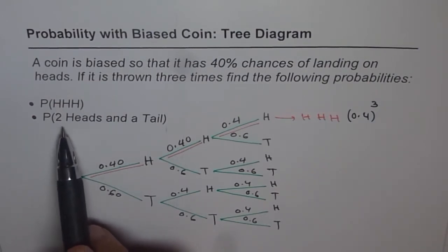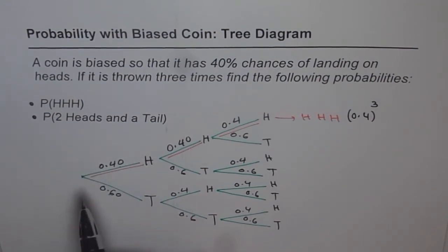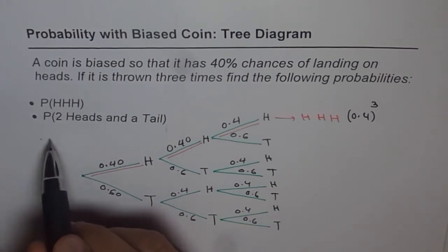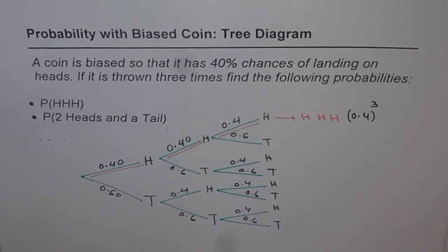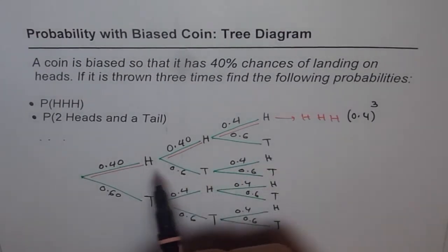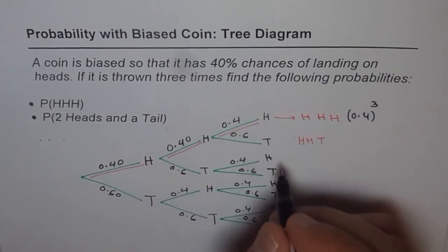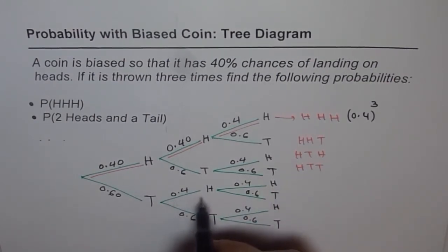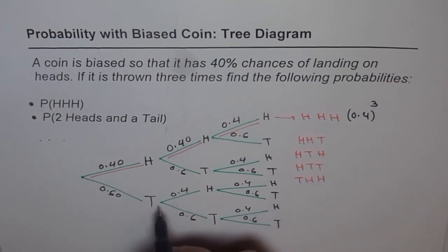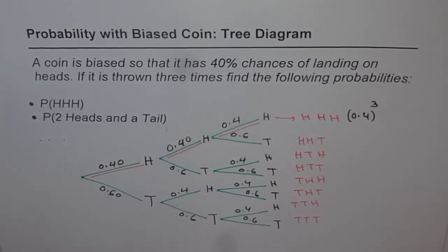Now let's look at the second option: 2 heads and a tail. That could be head-head-tail, head-tail-head, or tail-head-head. Let me write down all 8 combinations: HHH, HHT, HTH, HTT, THH, THT, TTH, TTT. Out of these, the ones with exactly 2 heads and 1 tail are: HHT, HTH, and THH — three different combinations.